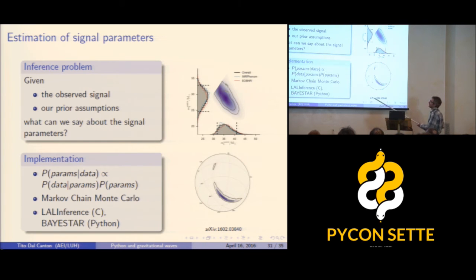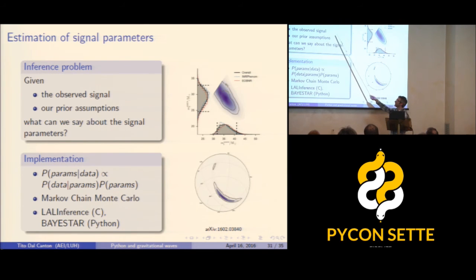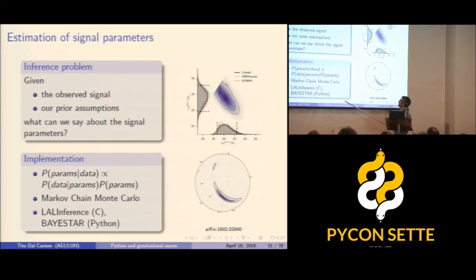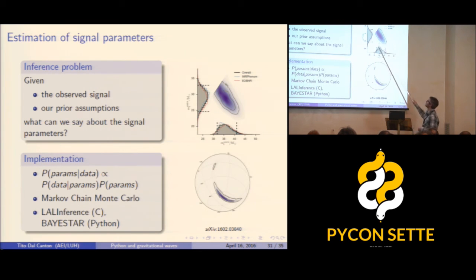We also had to estimate the parameters of this detection — a Bayesian inference problem. Given the observed signals and prior assumptions on the parameters, we compute the posterior distribution. This is done by Markov chain Monte Carlo integration, using one code inside LAL in C and another called LALInference implemented in Python. The results include posterior distributions of the masses of the two objects, joint and marginal distributions, and the posterior distribution on the sky.